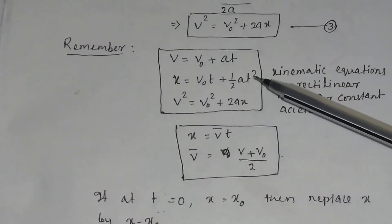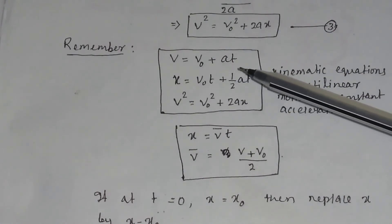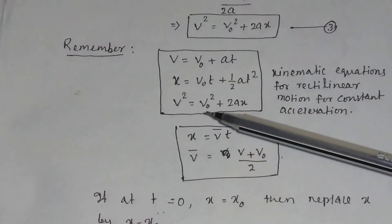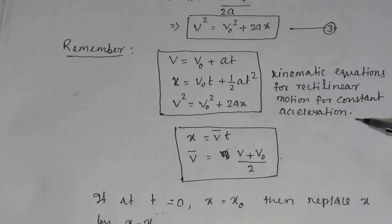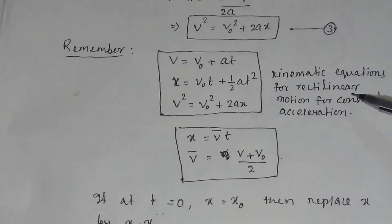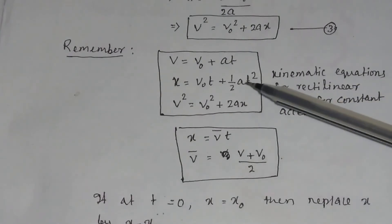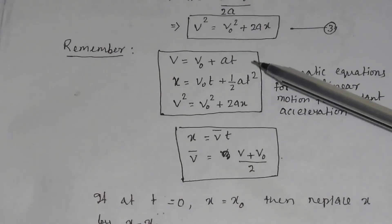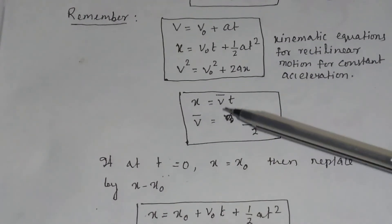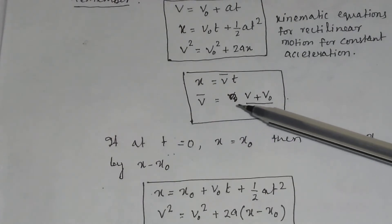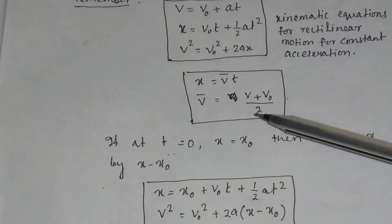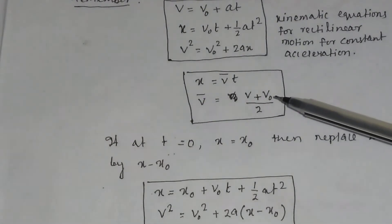You have to remember these three equations of motion: v equals v0 plus a·t; x equals v0·t plus half·a·t²; and v² equals v0² plus 2a·x. These are called kinematic equations for rectilinear motion for constant acceleration. The acceleration is taken to be constant, and it is rectilinear because the object moves in a straight line. Force is not involved here, which is why they are called kinematic equations. Also remember that displacement x equals average velocity times time, and average velocity equals (initial velocity plus final velocity) divided by 2.